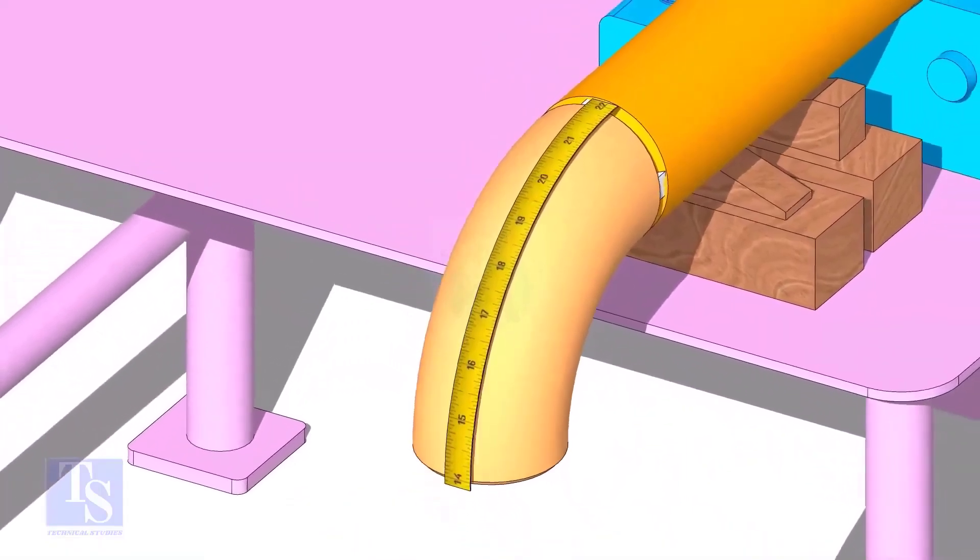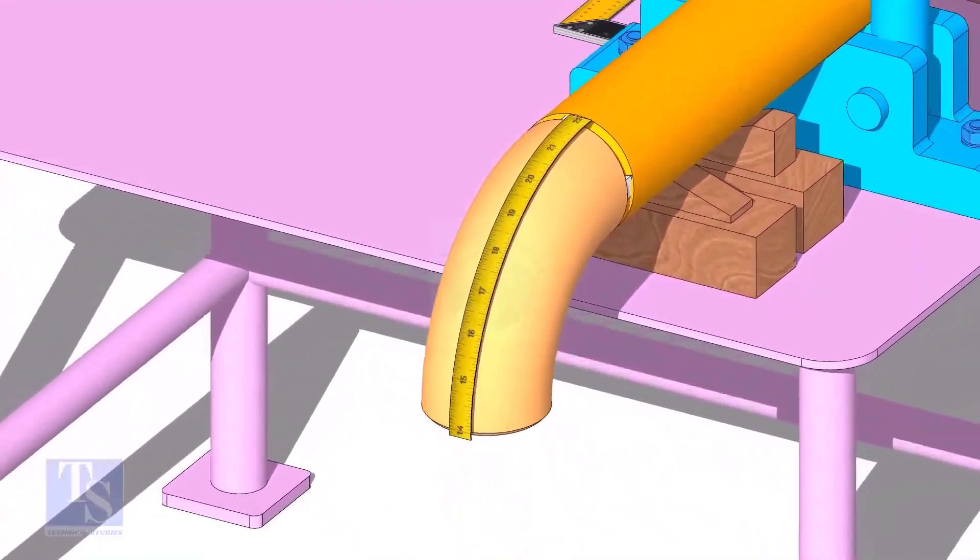Measure the outer circumference of the elbow and mark the half circumference on the center line, as shown.